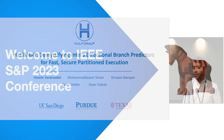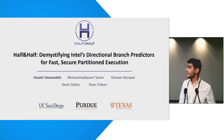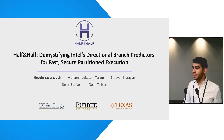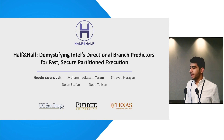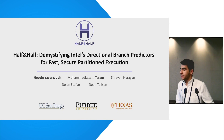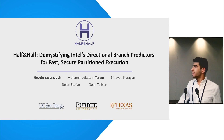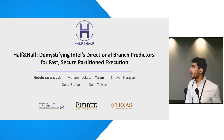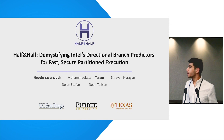Thanks for the introduction. Today I'll be presenting Half-and-Half, where we discovered a surprising hidden feature in Intel processors that can be used to increase significantly the security, including shutting down an entire class of Spectre attacks with only about 4% overhead. This work is a team effort by UC San Diego, Purdue University, and UT Austin.